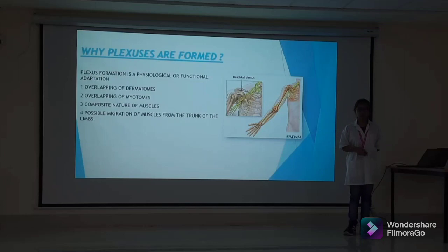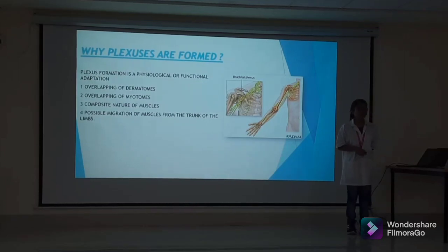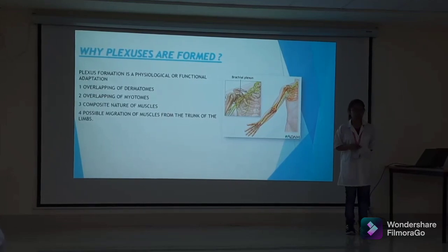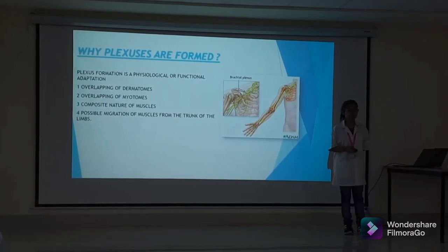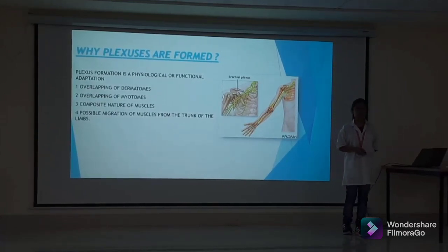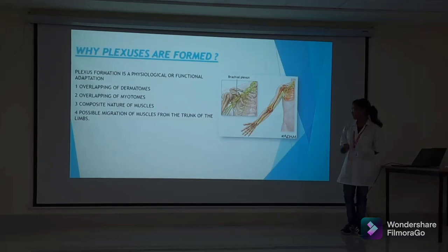Why are plexuses formed? Plexuses are formed because of physiological and functional reasons, such as overlapping of dermatomes, myotomes, composite muscles, and migration of muscles from the trunk to the limbs.